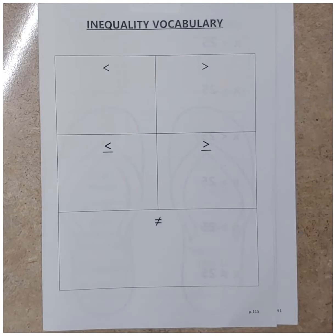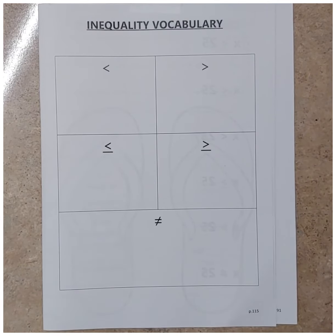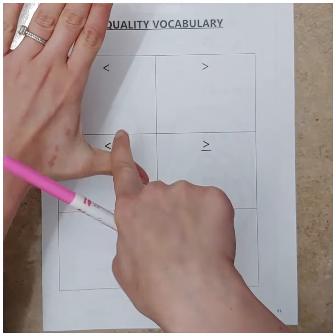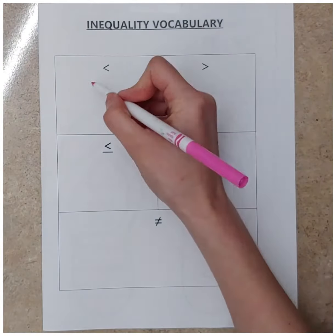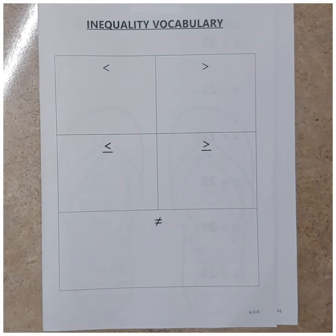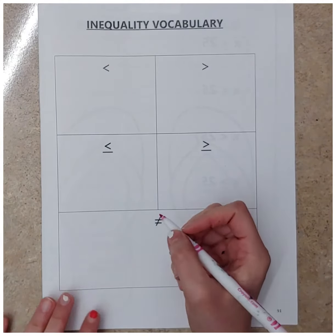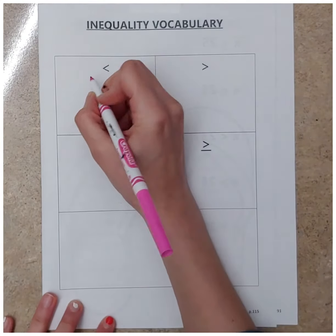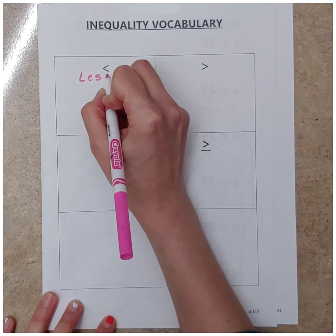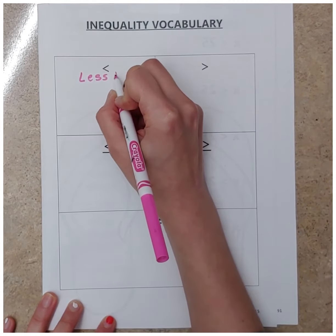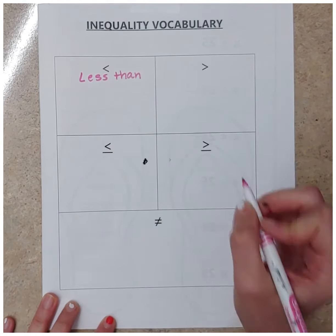The first one we're going to work on is the less than symbol. We know it's the less than symbol because if we were to make an L with our hands, our hand makes an L. So left hand makes an L — less than symbol. I'm going to write this in marker so it stands out a little bit more: less than.